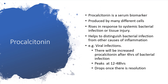Now, more about procalcitonin. Procalcitonin is a serum biomarker. It is produced by many different cells and responds to systemic bacterial infection and sometimes to tissue injury. The level of procalcitonin will help us to distinguish bacterial infection from other causes of inflammation, because inflammation could not be caused by bacteria alone — for example, it could be caused by viral infection. There will be an increase in the level of procalcitonin immediately at about four hours of bacterial infection, and the level will peak between 12 and 48 hours — so the first to the second day of infection with bacteria.